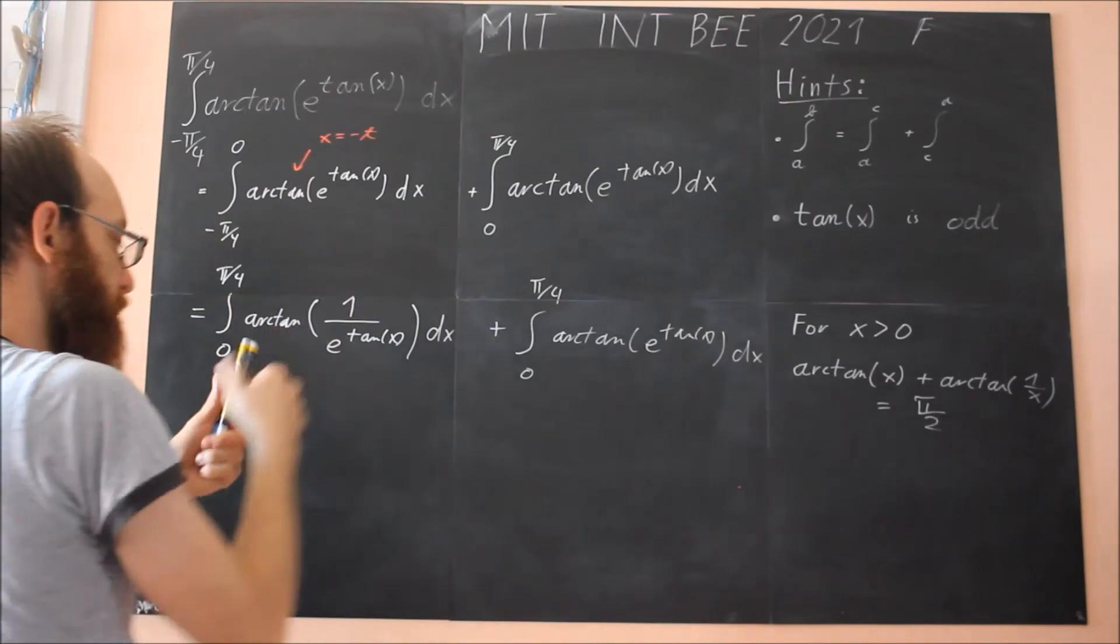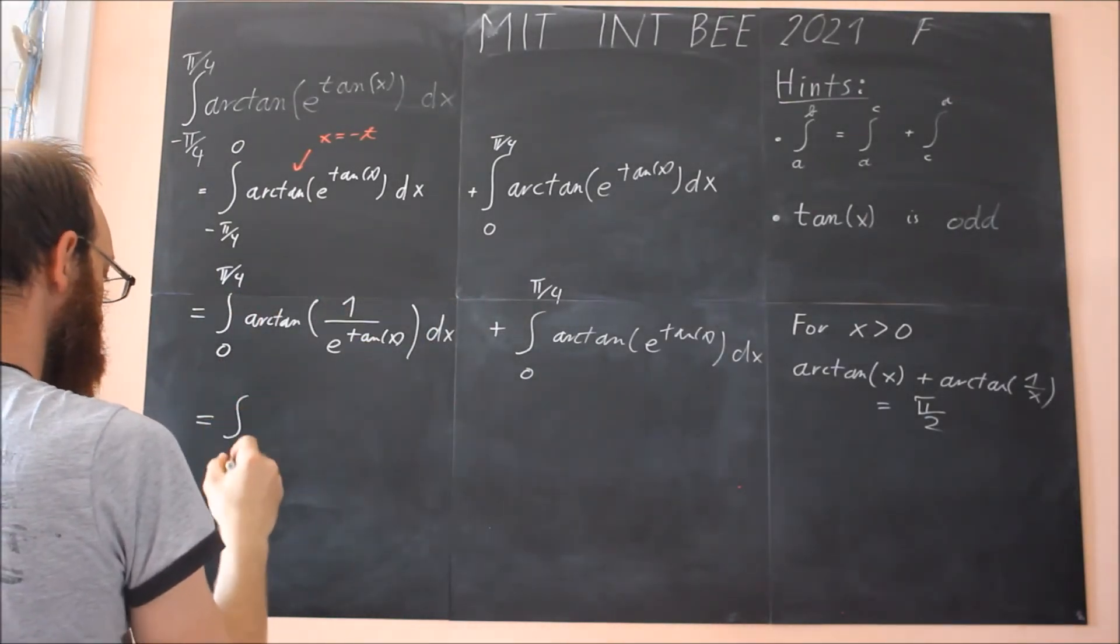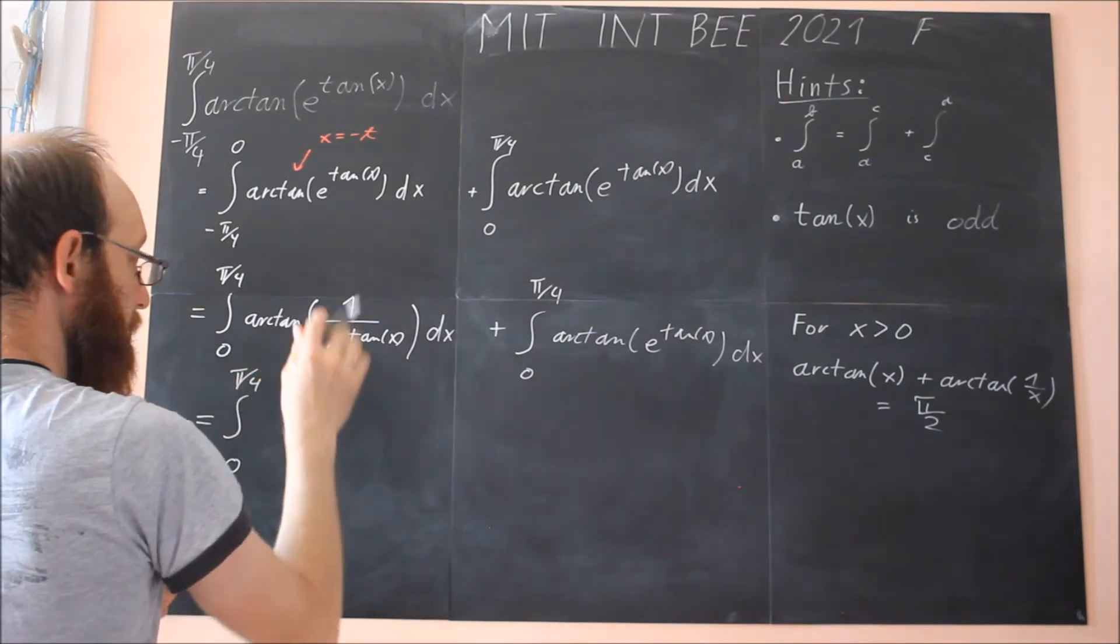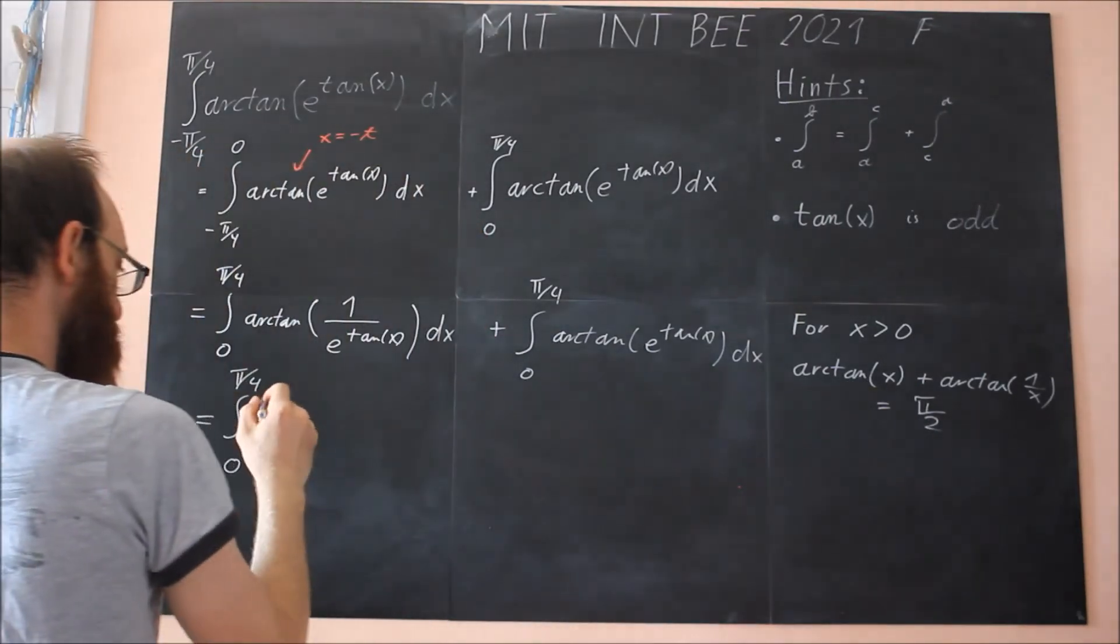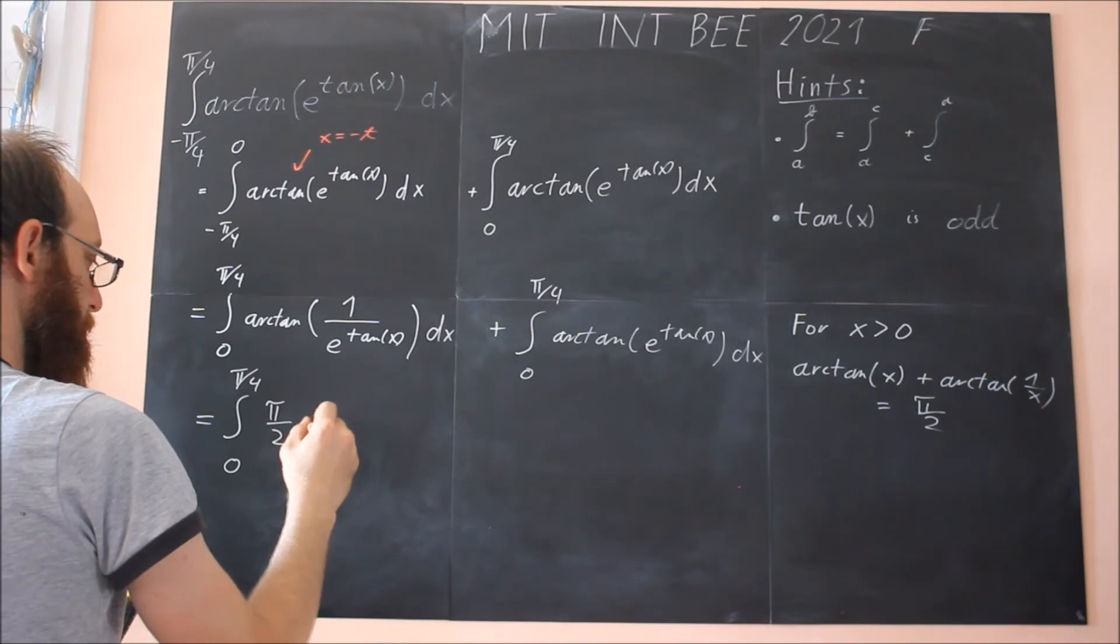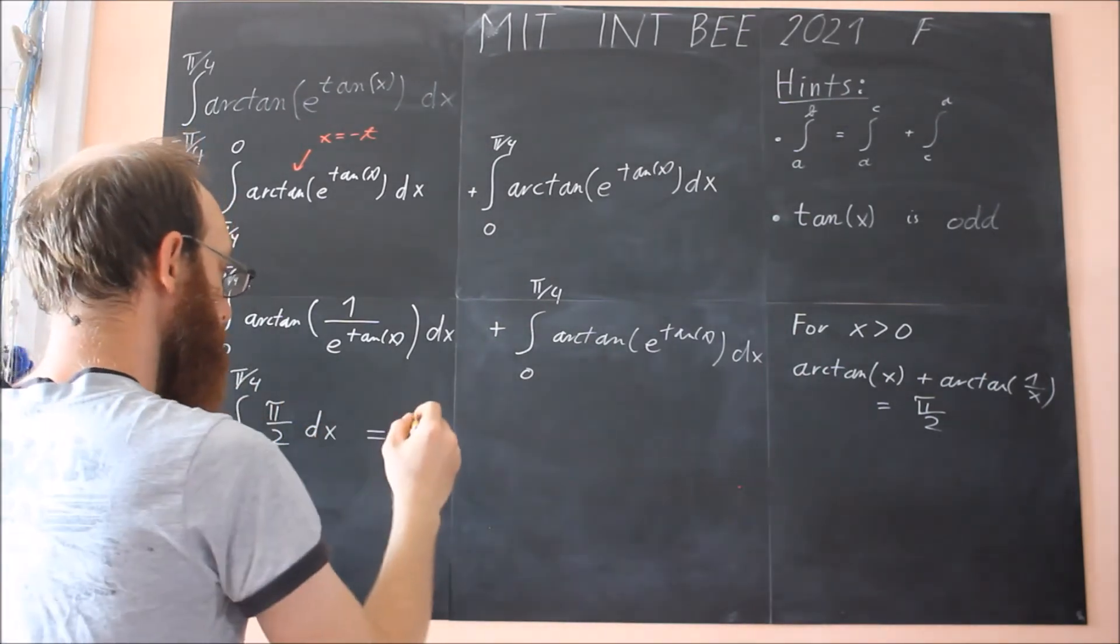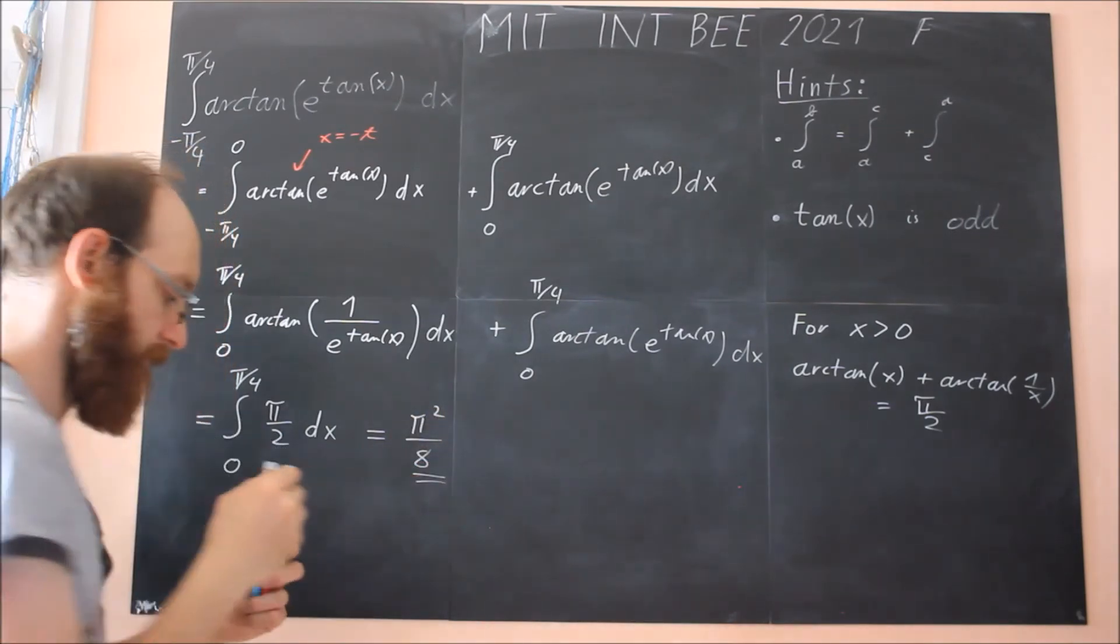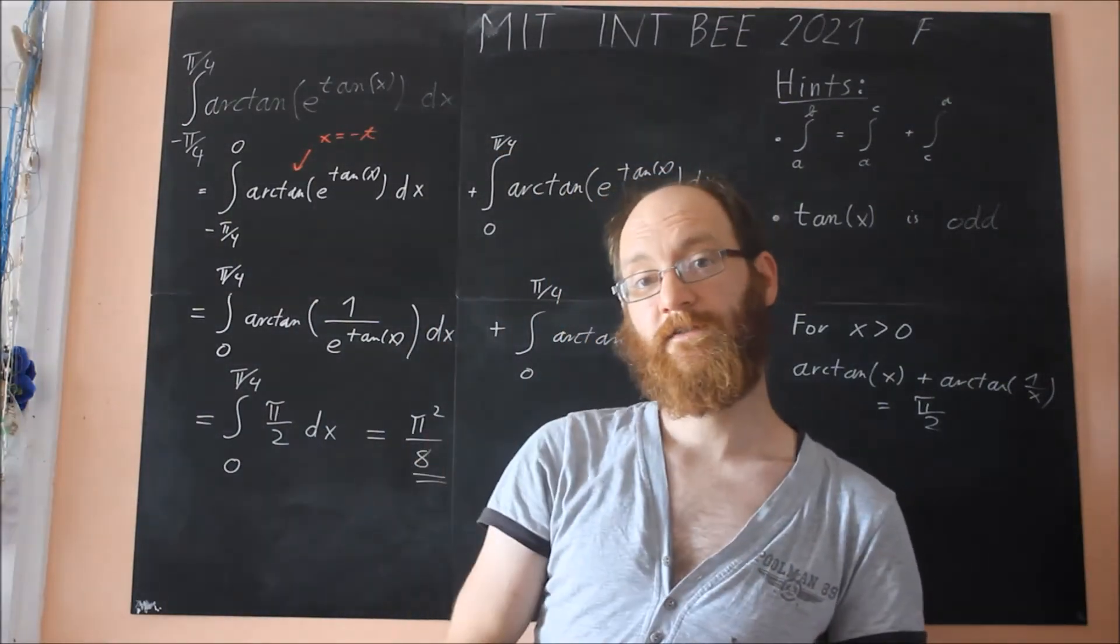So integral is linear, so we put these again together. So we get integral from zero to pi over four. The sum of these two arc tangents, this is pi over two, pi over two dx. And if you integrate this, this is easy, you get pi squared over eight. And this is our final result.